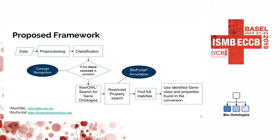Using this information, we built a complete framework where you can easily input your data, do preprocessing on it, and then use our model for classification to see if the gene concept is present, including this concept recognition. We then wanted to have a list of ontologies that only focus on genes. The way we did it was to use AberOwl, which is an ontology repository that has the option of selecting a limited list of ontologies focusing on a specific subject. After getting the list from AberOwl of gene ontologies, we perform a search in BioPortal for annotation — a restricted property search — and find full matches using both the class identifier, such as gene, and the properties in the conversion.